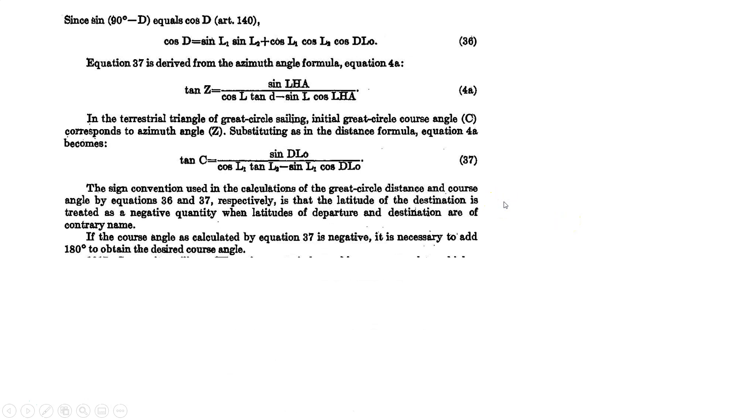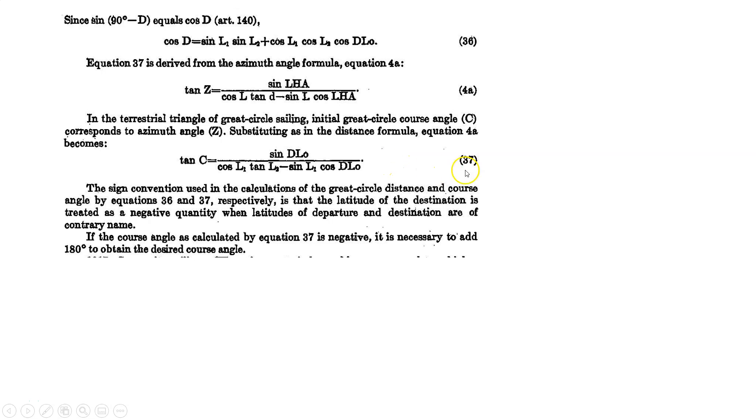I thought I was. Okay, here we go. Great. So here we are, I just blew that up. This is formula 36 for cosine D. And this is formula 37.